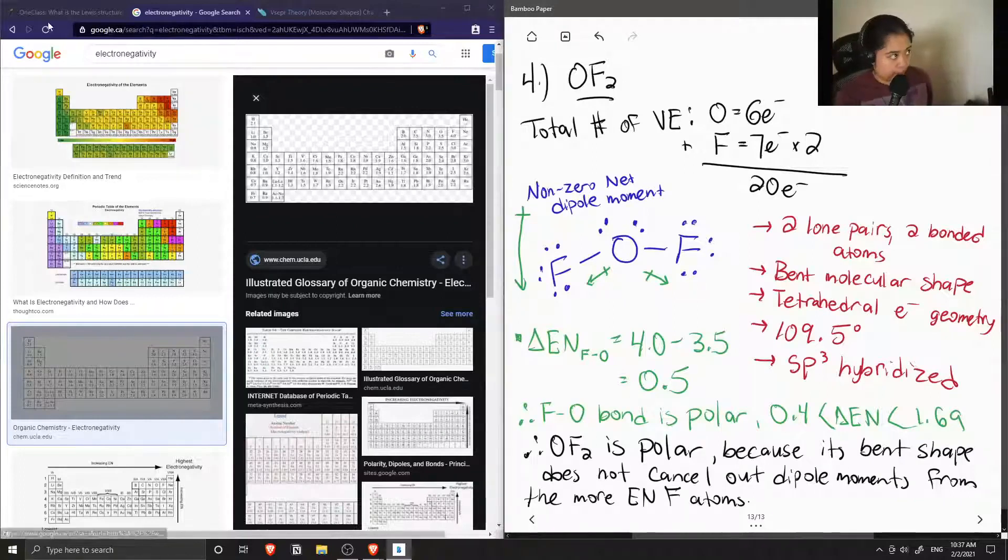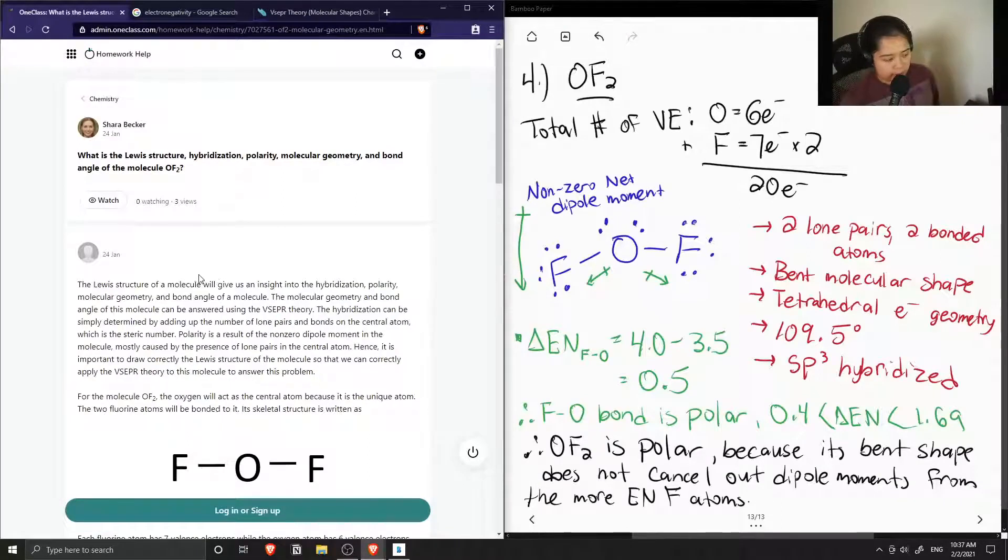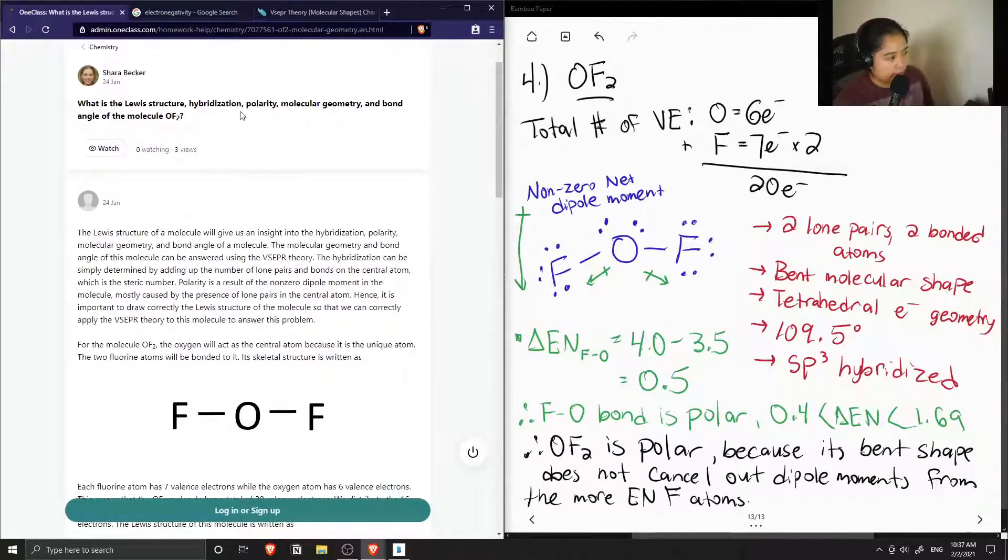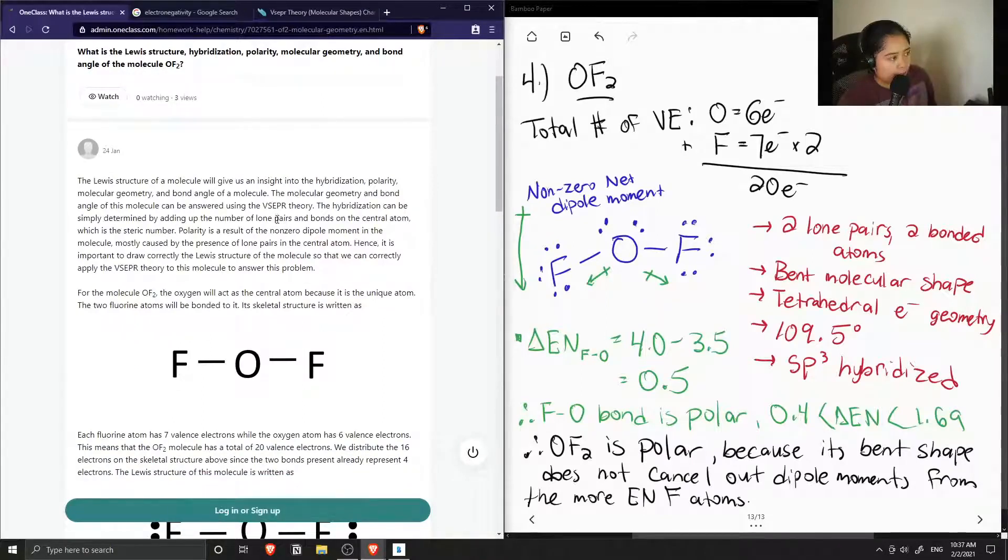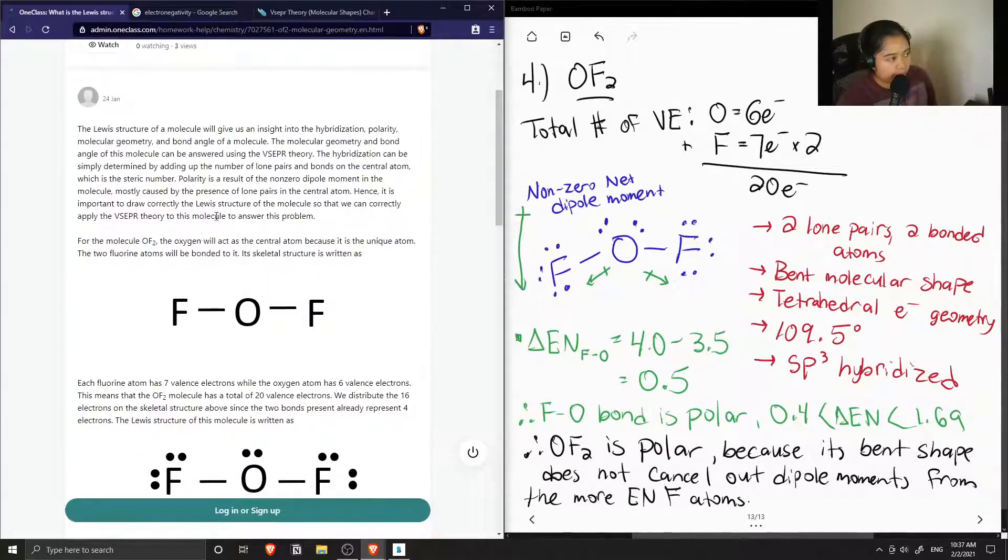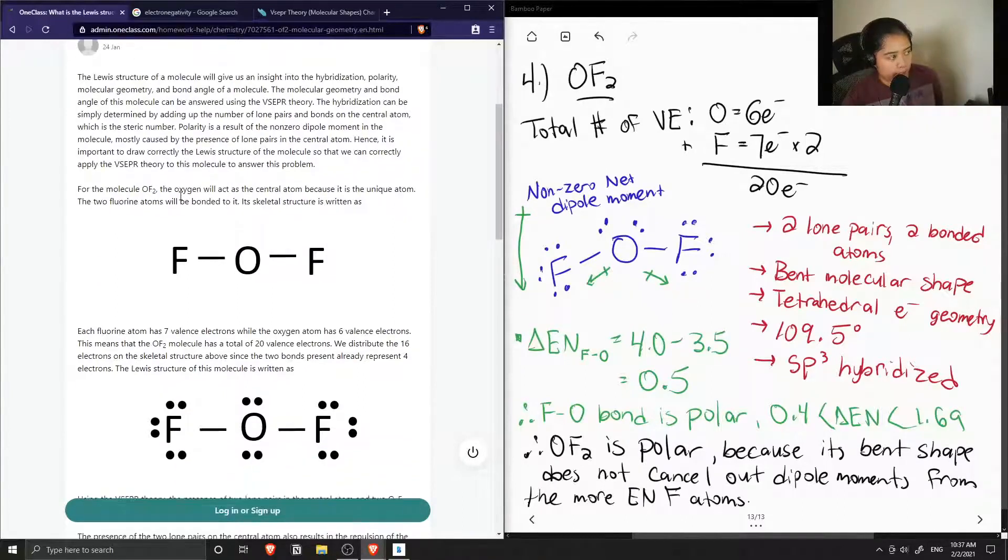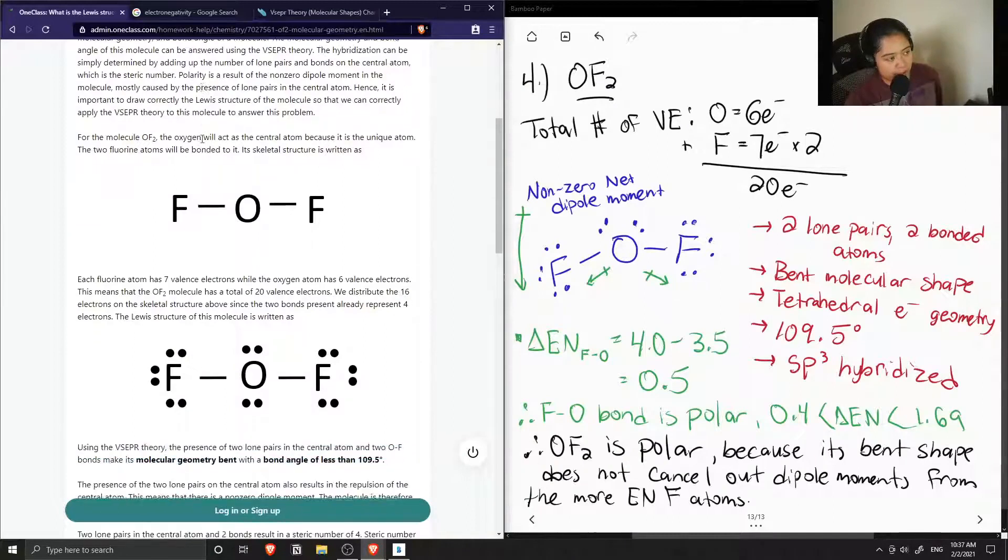That seems to answer all of the questions. Let's see what the tutor said. The Lewis structure will give us insight into the hybridization, polarity, molecular geometry, and bond angle of a molecule. These can be answered using VSEPR by adding up the number of lone pairs and bonds, which is the steric number. Polarity is a result of the non-zero dipole moment in the molecule, mostly caused by the presence of lone pairs. Hence, it's important to draw correctly the Lewis structure of the molecule so that we can correctly apply VSEPR theory to answer this problem.